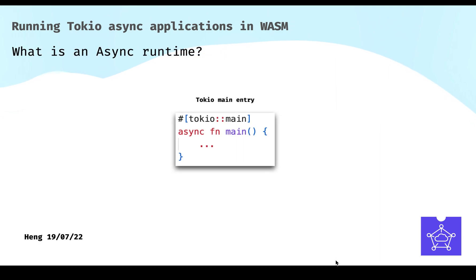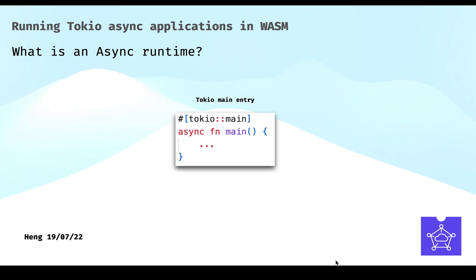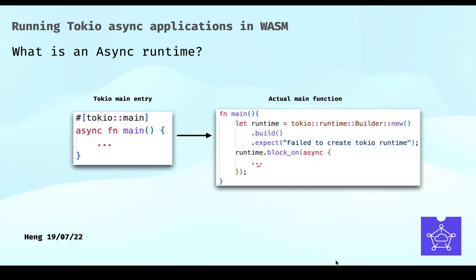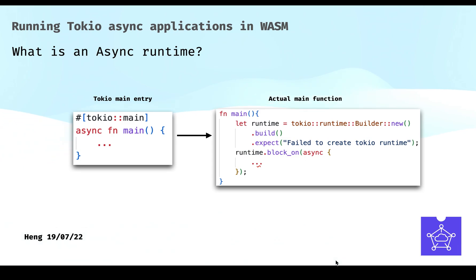An Async Runtime takes the responsibility to poll futures. Take the Tokio Runtime as an example. Normally, we use tokio::main to wrap our main function like this — it's just a procedural macro which transforms the main function to the right one. As you can see, we create a Tokio Runtime instance first, and then block on the main future. In the main future, we can do what we want, such as reading a file or performing a network request.